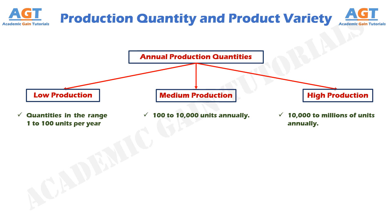Production quantity refers to the number of units produced annually of a particular product type. Some plants produce a variety of different product types, each made in low or medium quantities, while other plants specialize in high production of only one product type. Product variety refers to different product designs or types produced in the plant. Different products have different shapes and sizes, perform different functions, are intended for different markets, and some have more components than others. The number of different product types made each year can be counted, and when this number is high, it indicates high product variety.